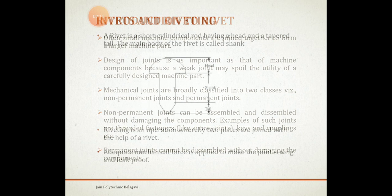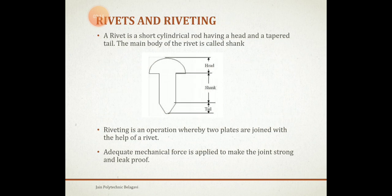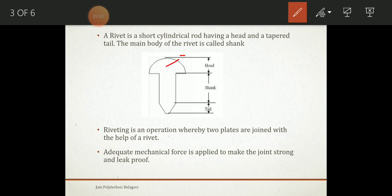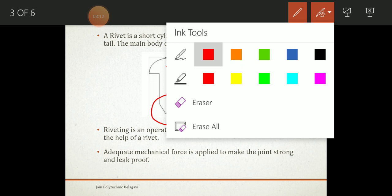Now, regarding the rivet and riveting: basically the rivet has three parts — one is the tail, which is the tapered portion; one is the shank portion; and one is the head portion. The rivet is a short cylindrical bar where the head is an integral part of it. The head is the upward portion, the long middle part is called the shank or body, and the lower tapered part is called the tail. This is the basic structure of the rivet used for riveting.